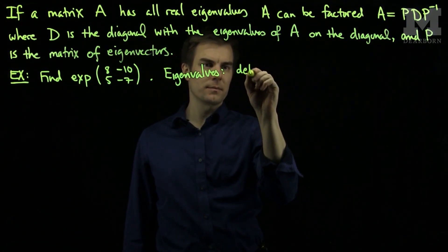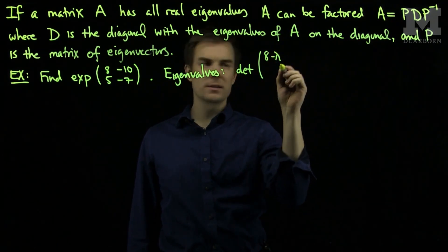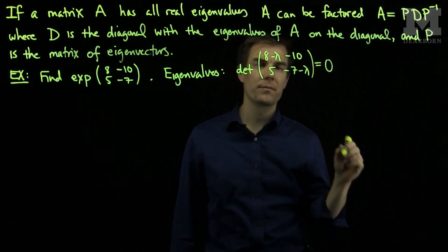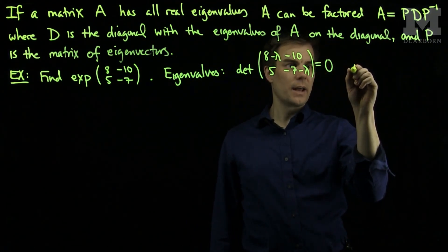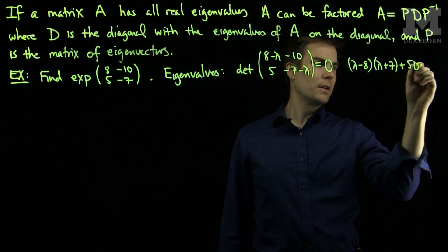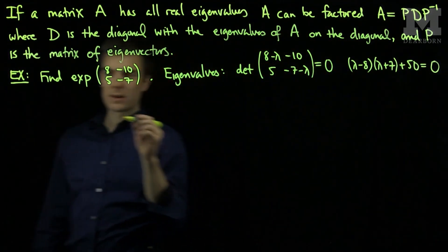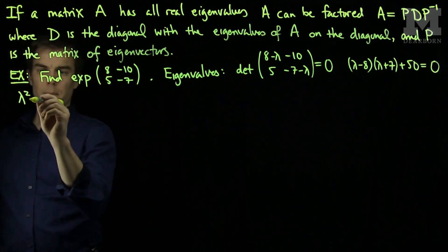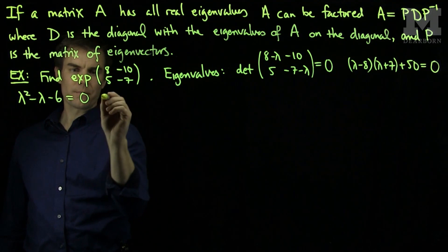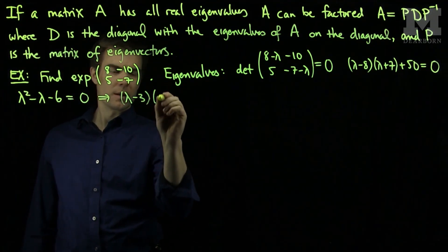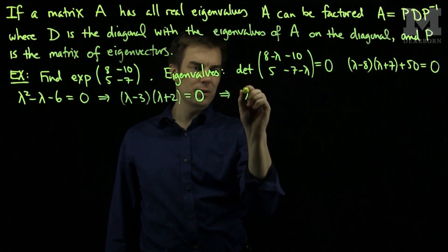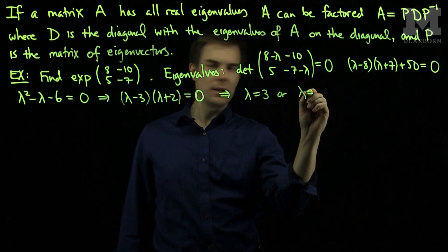To find the eigenvalues I'll compute the determinant of [8-λ, -10; 5, -7-λ] equals 0. In doing this I'll see that I will have (λ-8)(λ+7) + 50 = 0, which simplifies to λ² - λ - 56 + 50 = λ² - λ - 6 = 0. This factors as (λ-3)(λ+2) = 0, giving eigenvalues λ = 3 or λ = -2.